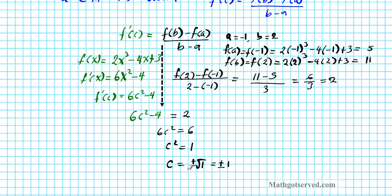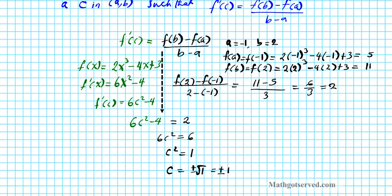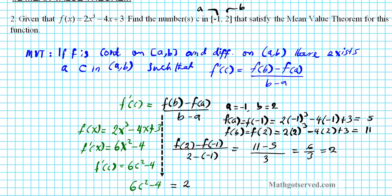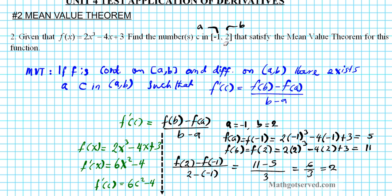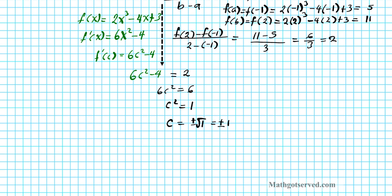Okay, now before we identify our c's that satisfy the conclusion, let's ensure that these two values are in the interval negative 1 comma 2. So if you notice, negative 1 is an endpoint, so it must be excluded. So, only positive 1 is in the interval negative 1 comma 2.